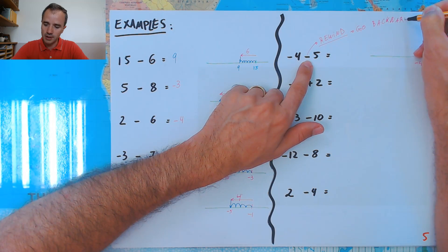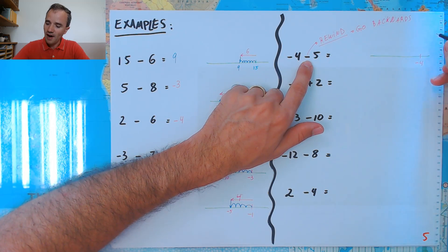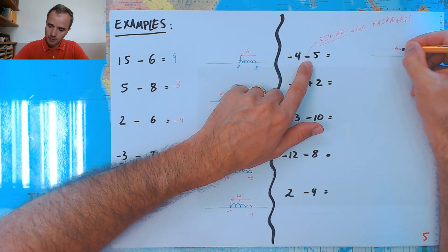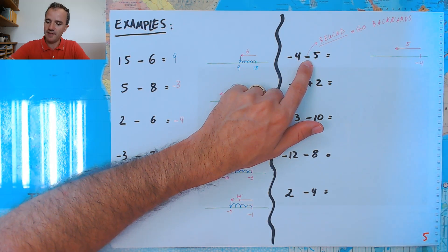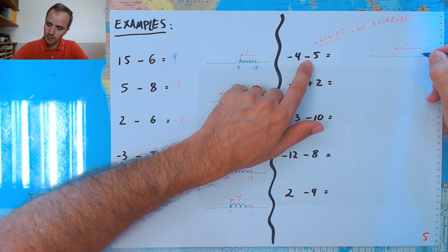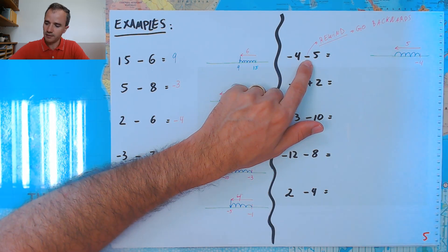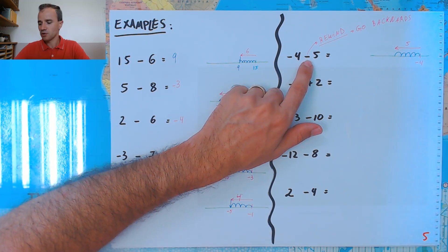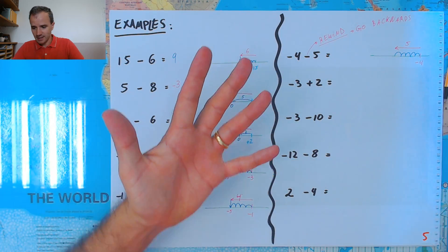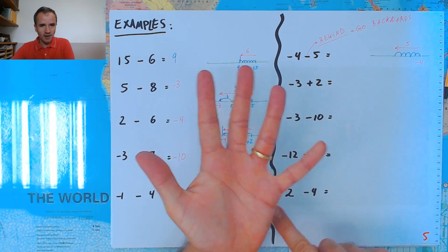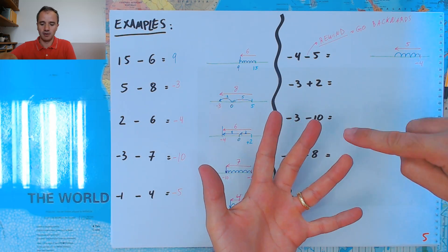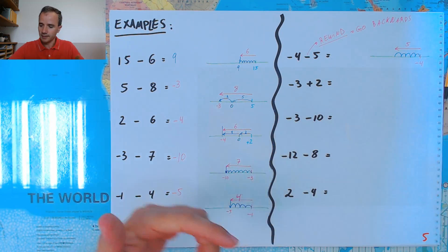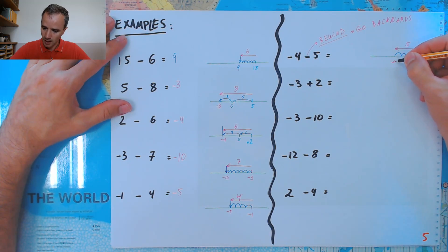Go backwards 5. Let's just go back 5 times. Minus 4: let's get back 5 — minus 4, minus 5, minus 6, minus 7, minus 8, minus 9. So the answer is negative 9.